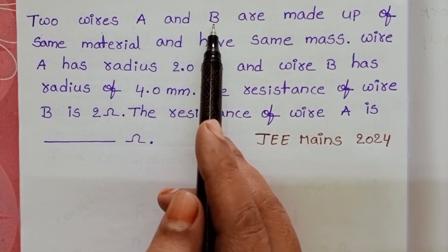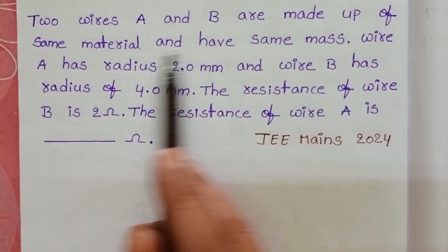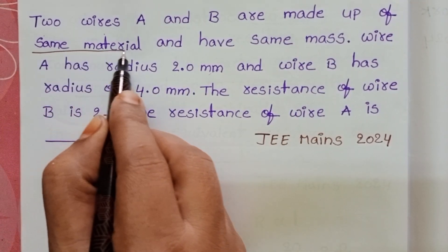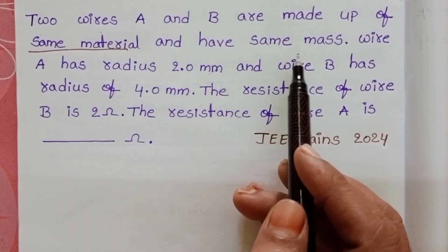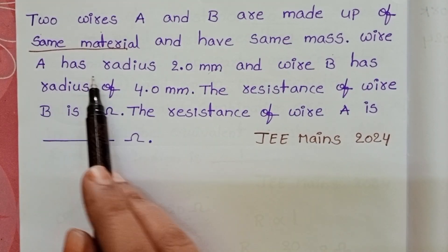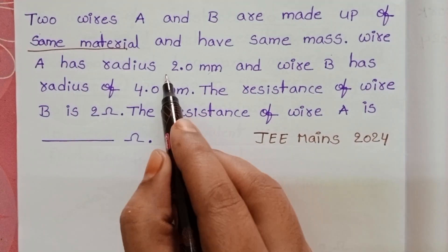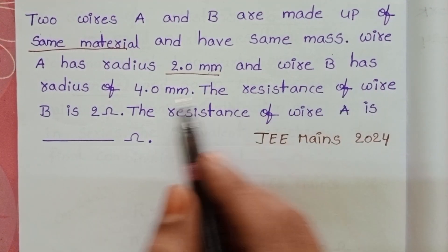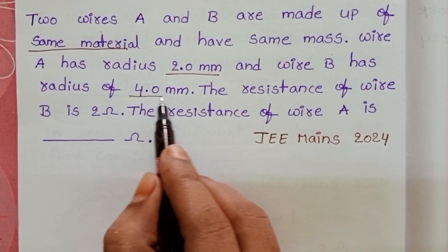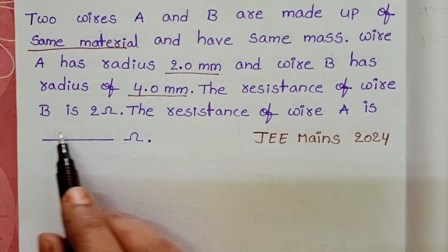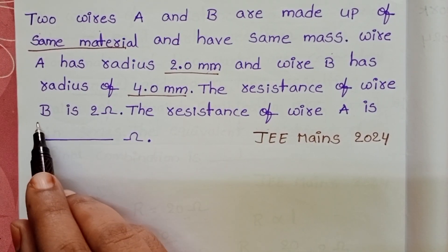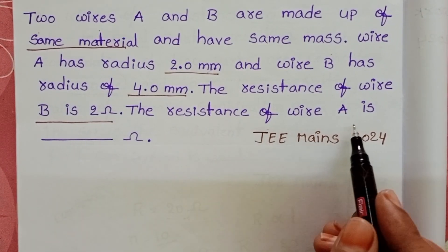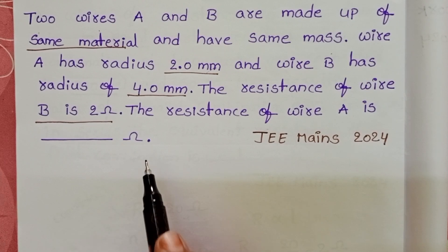Two wires A and B are made up of the same material and have the same mass. Wire A has radius 2 mm and wire B has radius 4 mm. The resistance of wire B is 2 ohm. Find the resistance of wire A.